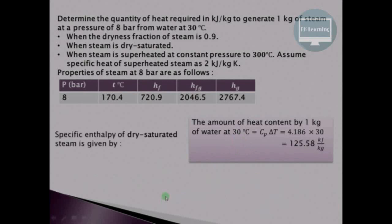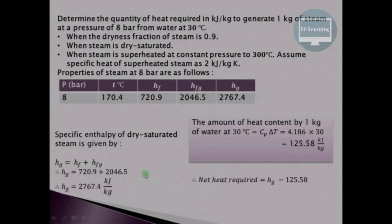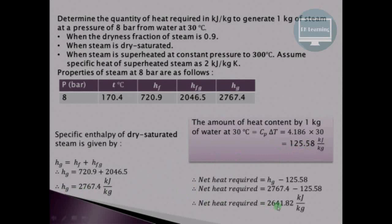For Case 2, the steam is dry saturated. The specific enthalpy is HF + HFG, or directly using HG = 2767.4 kJ/kg. The net heat required is HG minus the heat content of water at 30°C, that is 2767.4 − 125.58, giving 2641.82 kJ/kg.